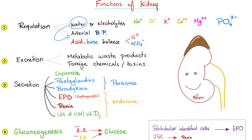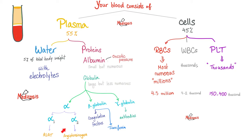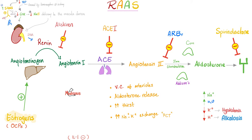Remember that renin comes from the kidney. We can consider it as both an enzyme and a hormone. Renin converts angiotensinogen into angiotensin 1. Angiotensinogen is a globulin — a plasma protein made by the liver. The main function of renin in life is to raise blood pressure. The most common trigger of renin release is low blood pressure, which leads to low kidney perfusion, prompting renin release to raise blood pressure back to normal.